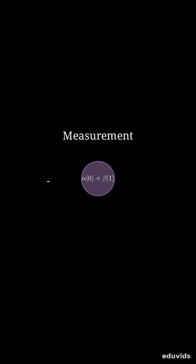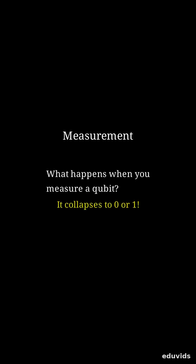But here's the kicker. When you measure a qubit, the superposition collapses. Just like our coin finally landing, it picks either zero or one definitively. So what happens when you measure a qubit in superposition? That's right. It collapses to a definite zero or one.